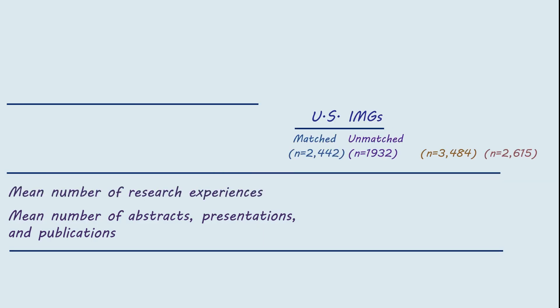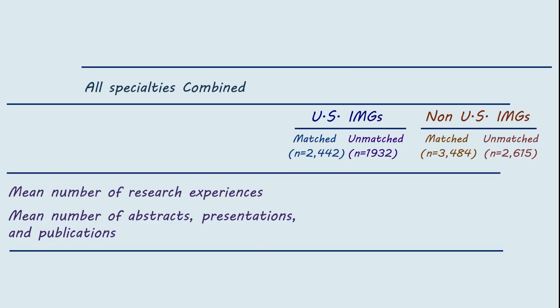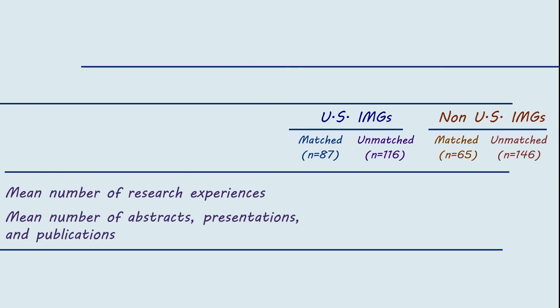When looking at the NRMP charting outcomes for IMGs applying to all specialties, we don't find a big difference in the research output between those who matched and those who did not match. However, when looking at IMGs applying to general surgery, we find a higher number of abstracts, presentations, and publications in the matching group.